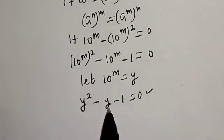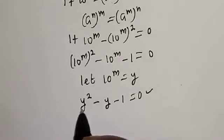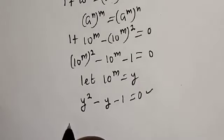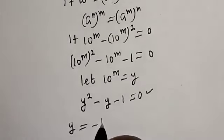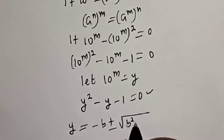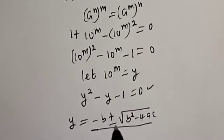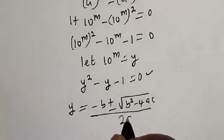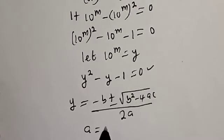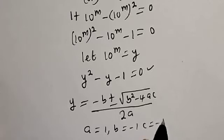This quadratic equation can be solved using the quadratic formula. The general formula is: y equals negative b plus or minus the square root of b^2 minus 4ac, all over 2a. Here a equals 1, b equals negative 1, and c equals negative 1.